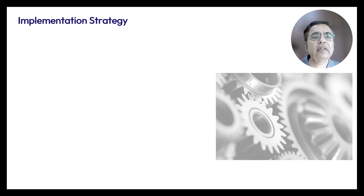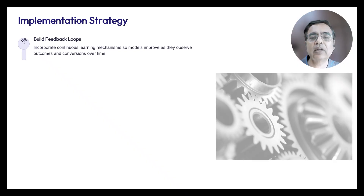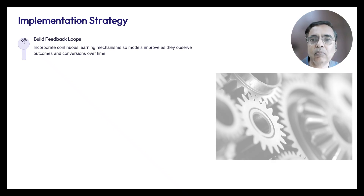Regarding implementation strategy: first, build feedback loops that incorporate a continuous learning mechanism so models can improve as they observe outcomes and conversions over time. This not only makes models stronger but also keeps them robust as the market changes, the customer base evolves, or the nature of incoming leads shifts. Having this feedback loop in place is very important.